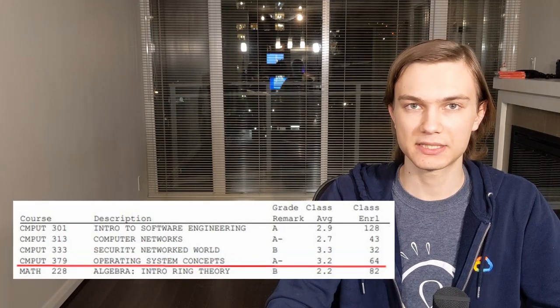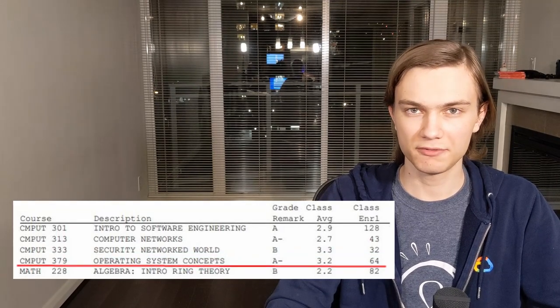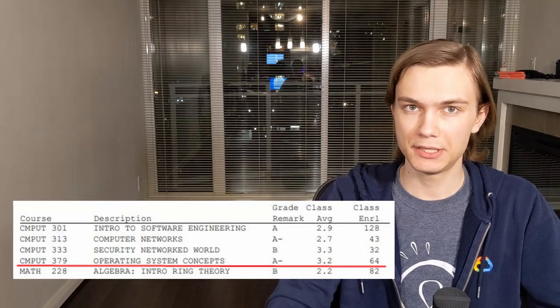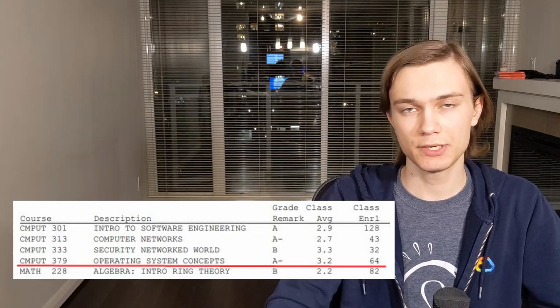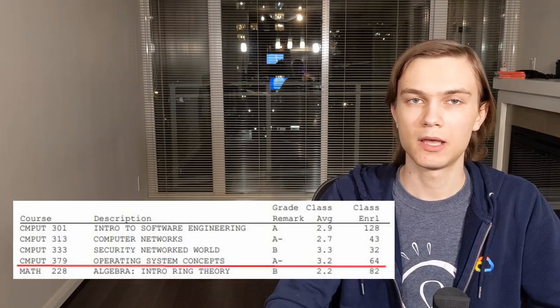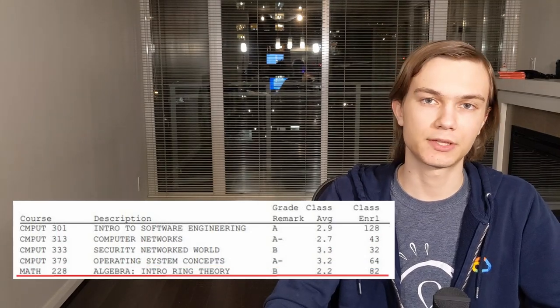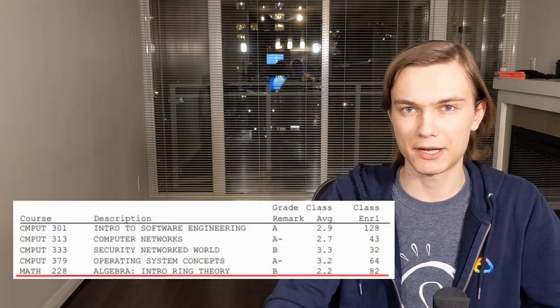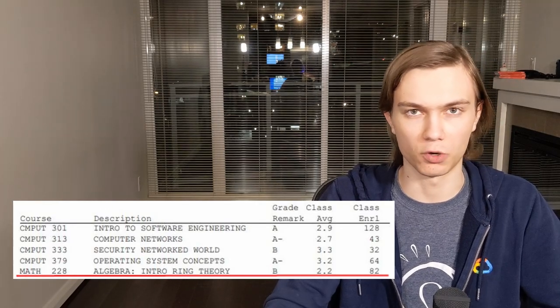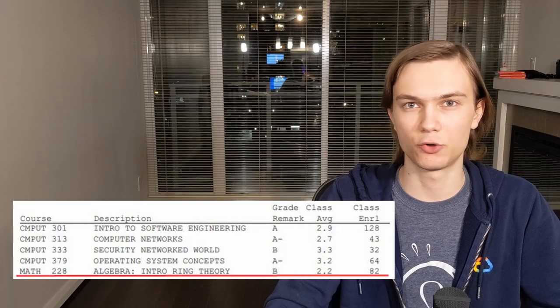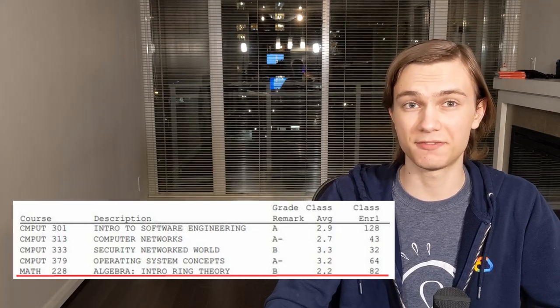CMPUT 379, Operating Systems Concepts. Same prof as the security class. Similar feedback, but I did put more time into it, so I did better. Absolutely love this course. MATH 228, Introductory Ring Theory. The class is not too bad in terms of content, but the prof made it horrible. Writing out all irreducible polynomials in Z mod 2 during the final is not fun. Sadly, I did not learn the lesson of not doing such horrible course loads, and it caught up to me later. But not now, and not in fall 2019. Let's get to that.